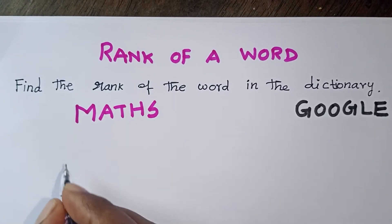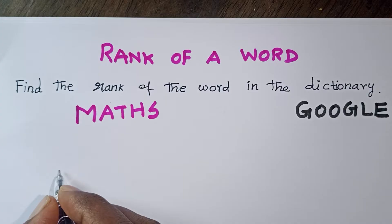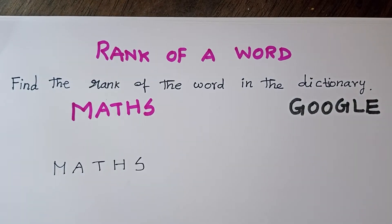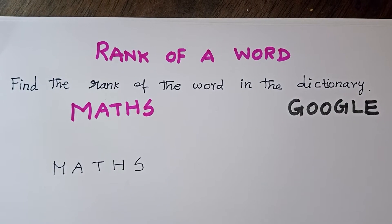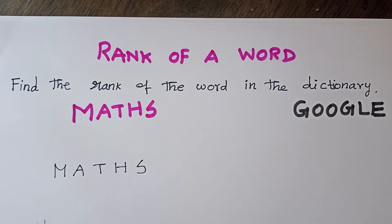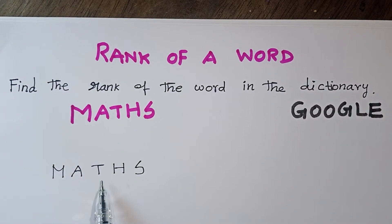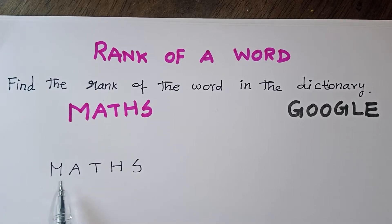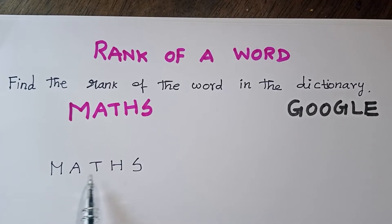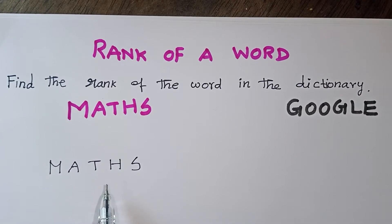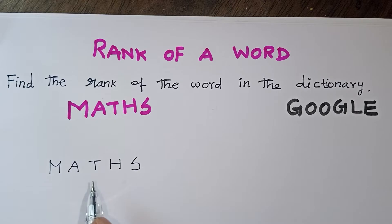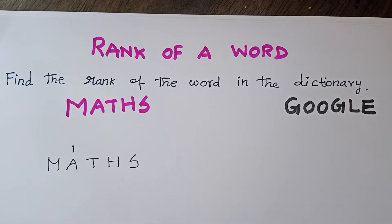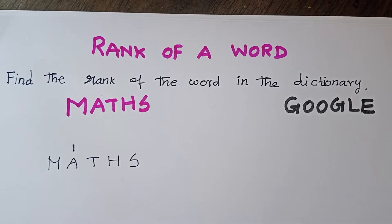First, without repetition. There is a method — you look at the position of each letter. The first step is to arrange letters in alphabetical order. If you look at the alphabetical order, you identify the position of the first letter: A, B, C, D, E, F, G, H, I...